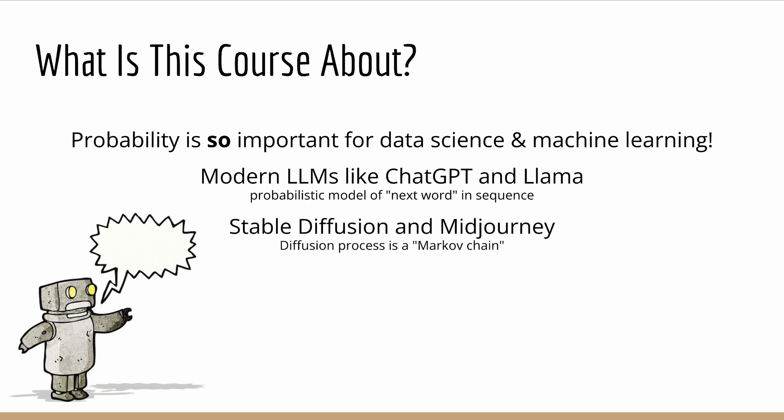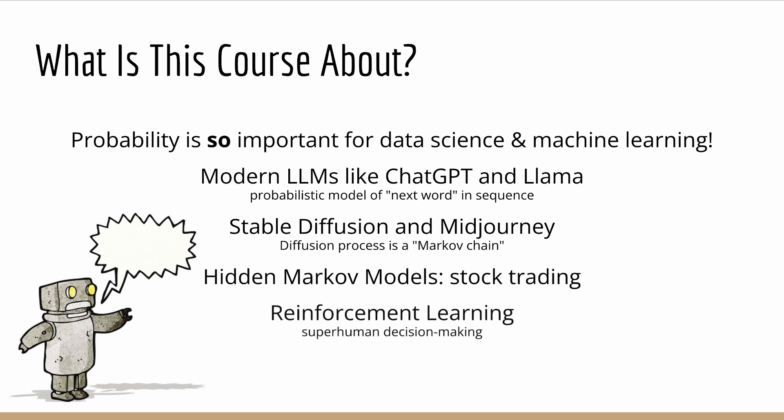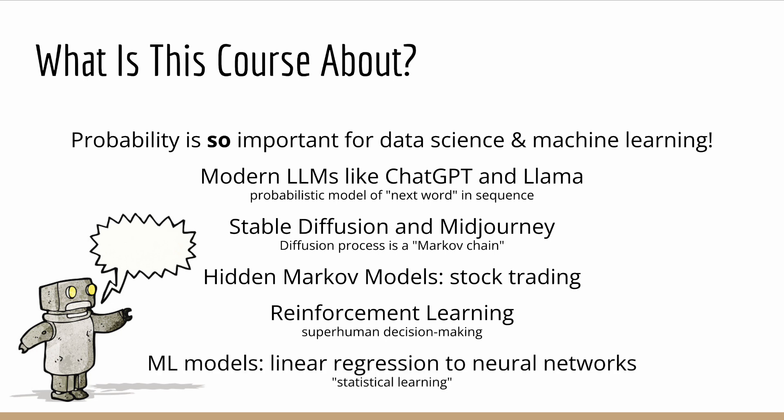From hidden Markov models for stock trading to reinforcement learning for superhuman decision making, probability is used. From linear regression to neural networks, probability is used. Speaking of which, these are all statistical learning methods, and statistics is basically probability part two. It is an understatement to say that probability is the foundation of data science and machine learning.